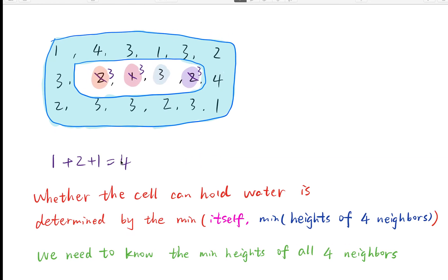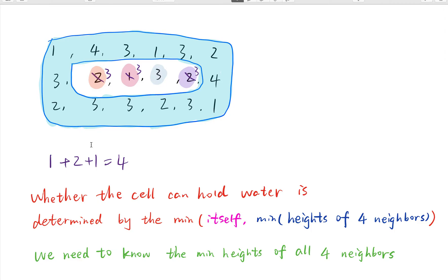How do you think about this problem? This is an obvious fact: as we need to trap water, we need four neighbors to have a larger height than itself. So the only condition this cell can hold water is that its up, down, left, and right neighbors have larger height than it. Based on this fact, we know these four edges will never hold any water as they do not have other boundaries — they themselves are boundaries, so they cannot hold water. All we need to handle is the cells inside these four boundaries.